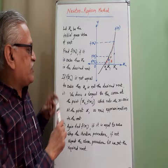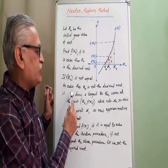then we get the desired root. If it is not equal to 0, then we have to go to the next step, Step number 2,